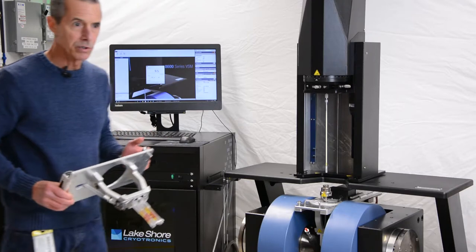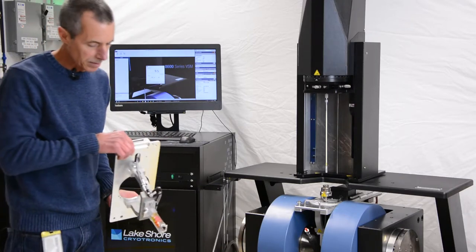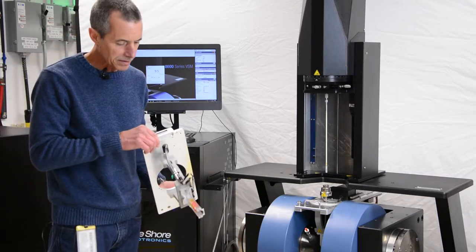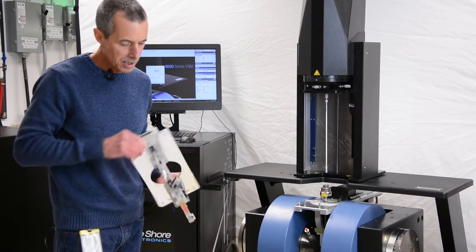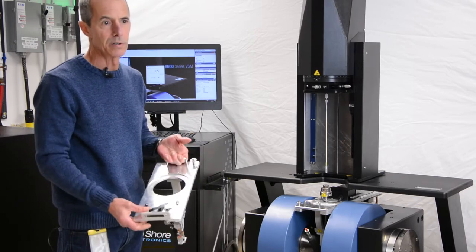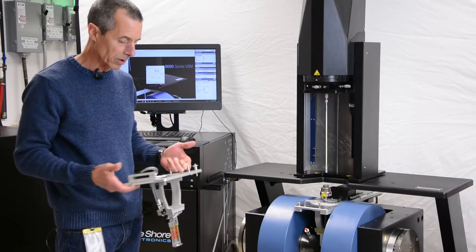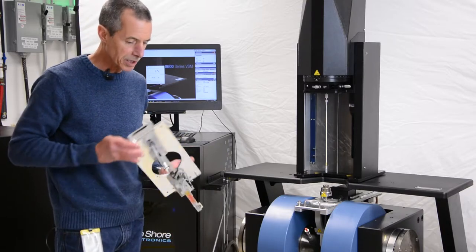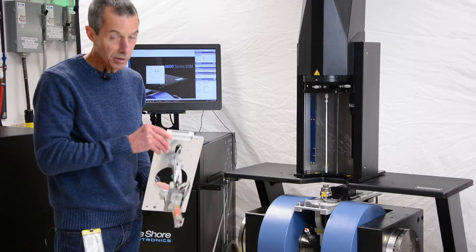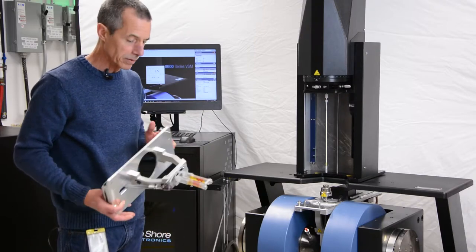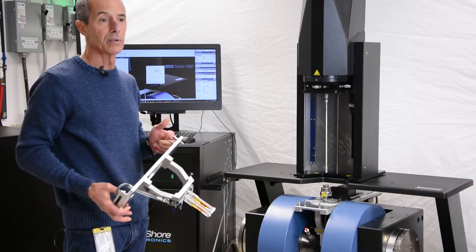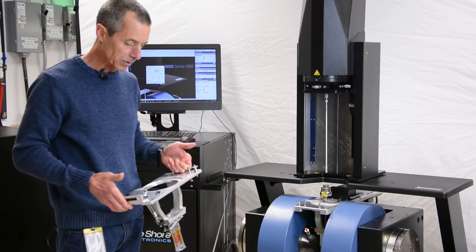The last option I want to show you is the vector magnetometer option. In a vector magnetometer, you have what are called vector coils that are oriented at 90 degrees with respect to the standard VSM coils. With this configuration, one can resolve the individual vector components of the total magnetization vector of a magnetically anisotropic material.